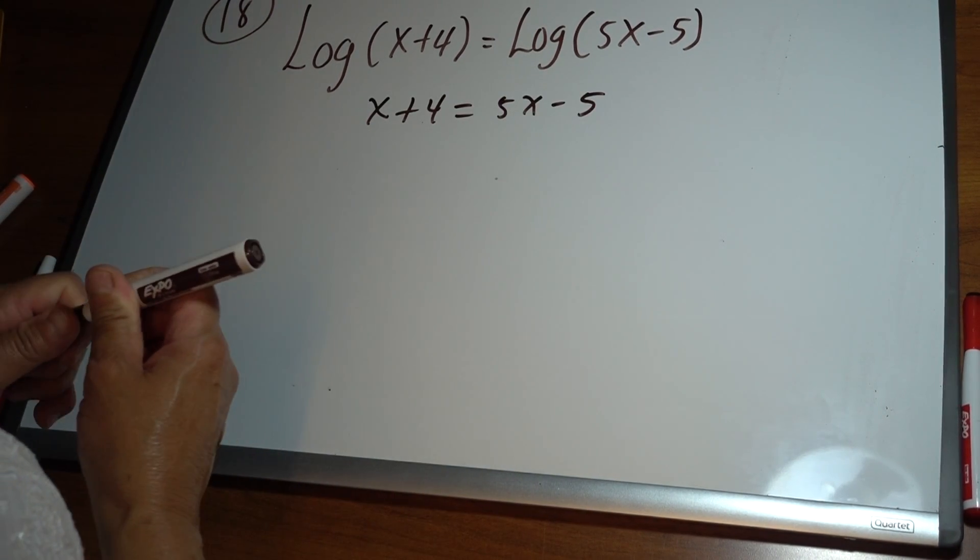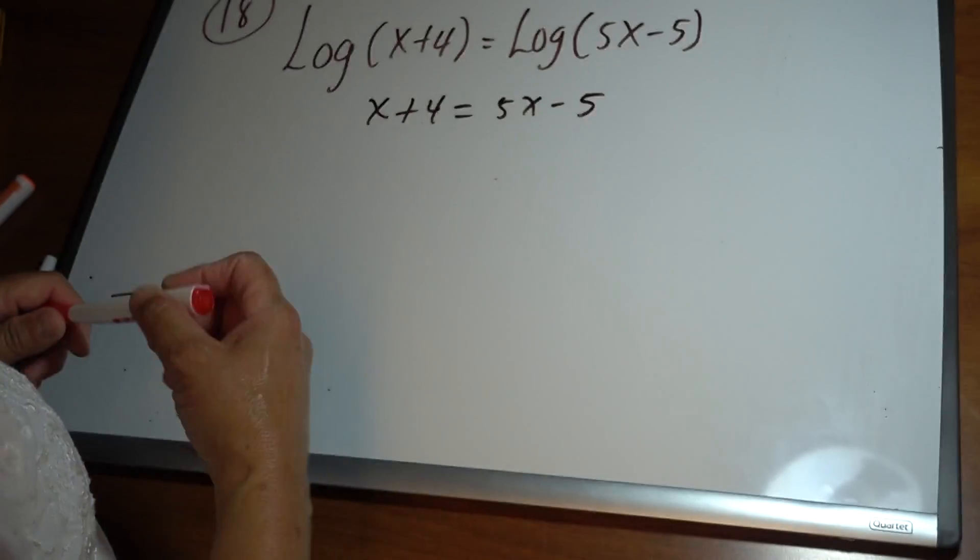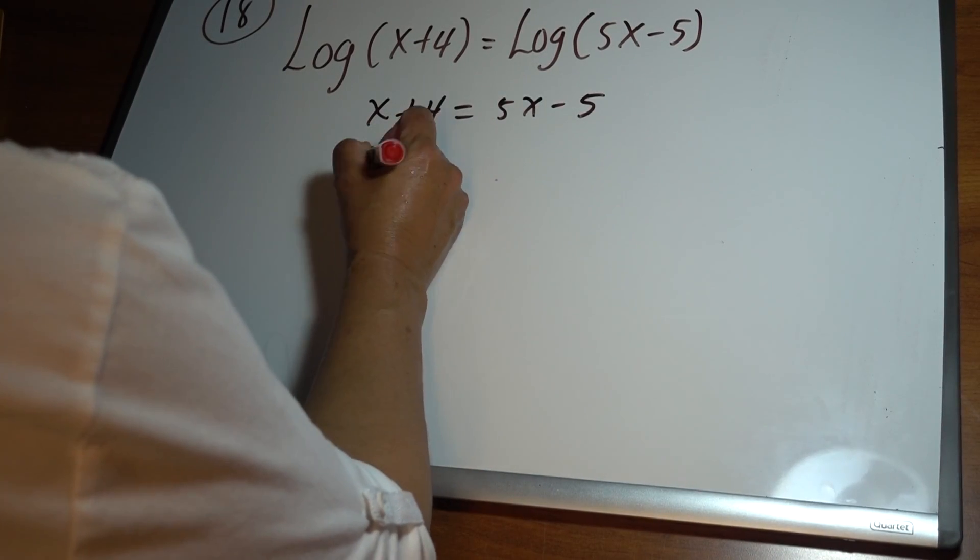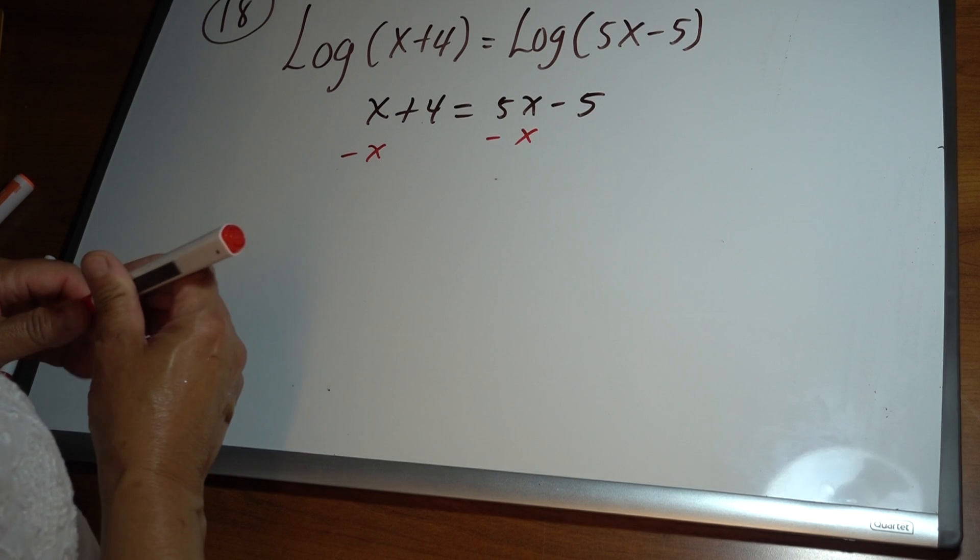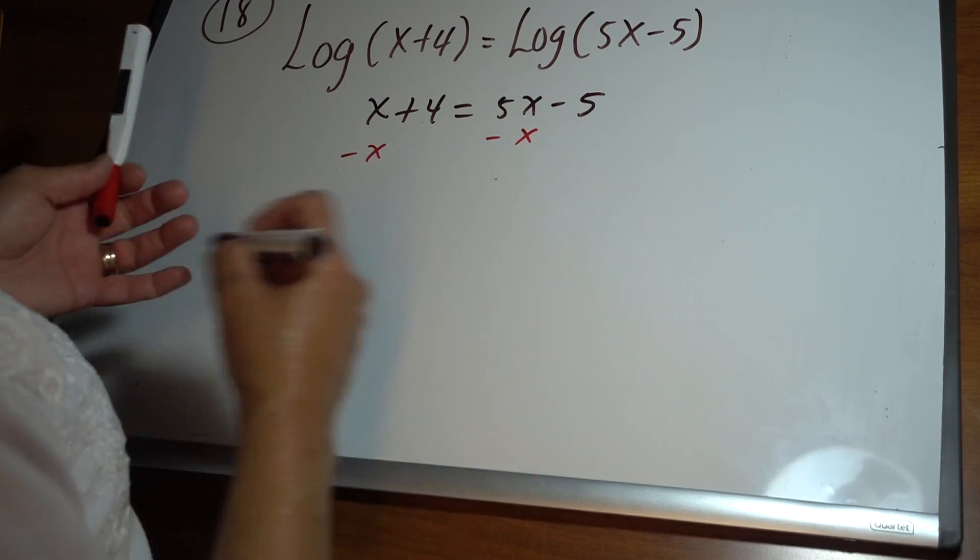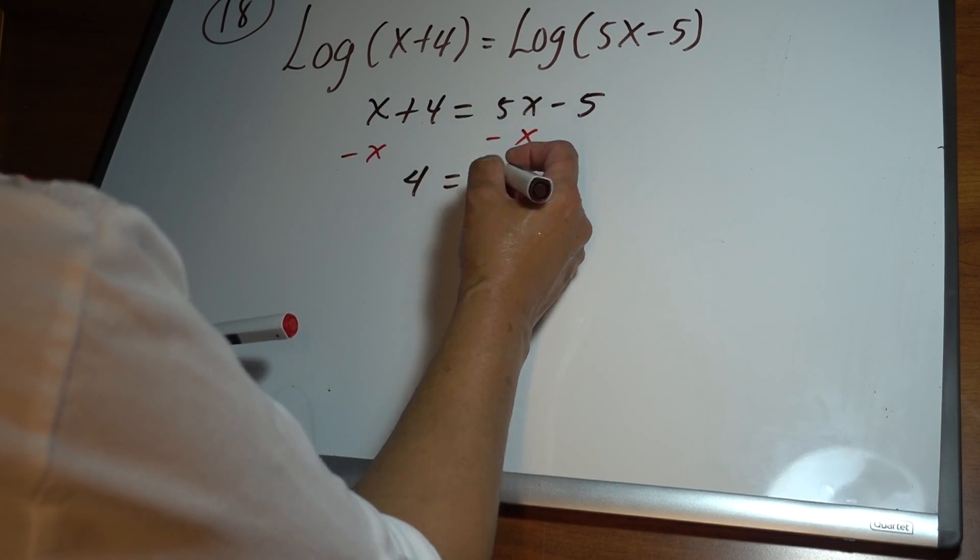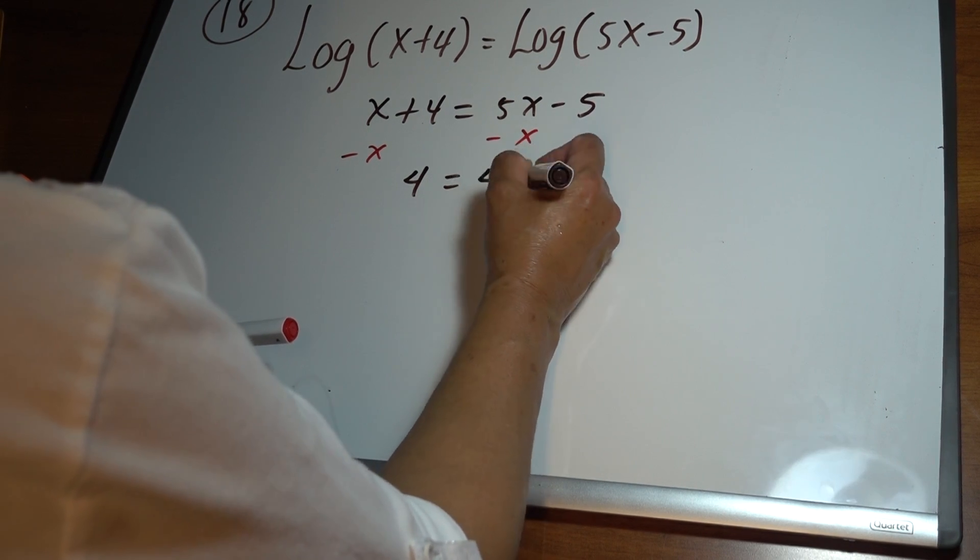From here we solve for x. Let's move x to the right side. We have 4 equals 5x minus x, which is 4x minus 5.